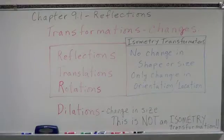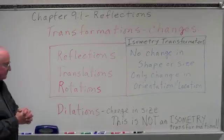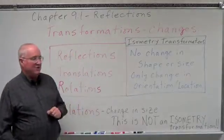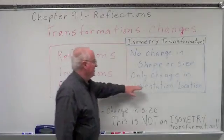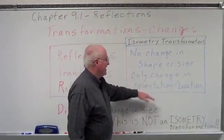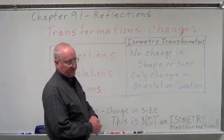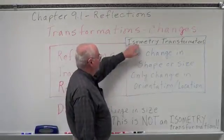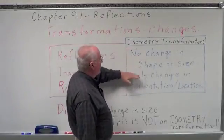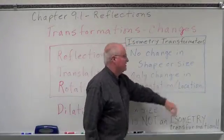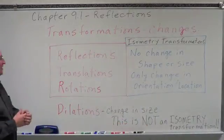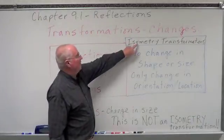Now these four transformations — three of them do not change the shape or the size of the figure. They change only the orientation or the location of the figure. We call those isometry transformations. If there is no change in the shape or size, only in the orientation or the location — in other words, where we place it, how we place it, turn it, or whatever else — we call those isometry transformations.